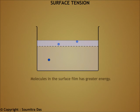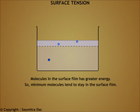Due to this downward resultant cohesive force acting on molecules in the surface film, they have greater energy. A system tends to be stable by minimizing energy, and hence the surface tends to contract. This is similar to a stretched membrane, which also tends to contract.